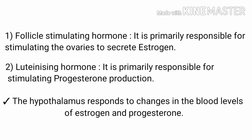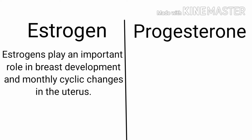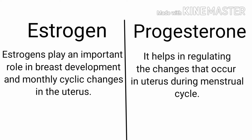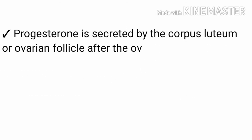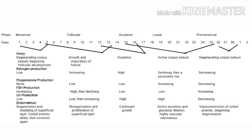The hypothalamus responds to changes in the blood levels of estrogen and progesterone. Estrogens play an important role in breast development and monthly cyclic changes in the uterus. Progesterone helps in regulating the changes that occur in the uterus during the menstrual cycle. Progesterone is secreted by the corpus luteum or ovarian follicle after the ovum has been released. It is an important hormone for the endometrium in preparation for implantation of the fertilized ovum.